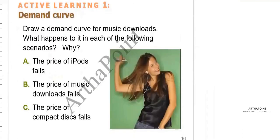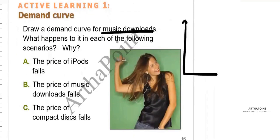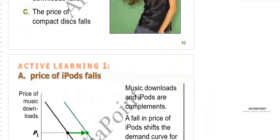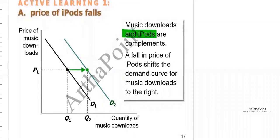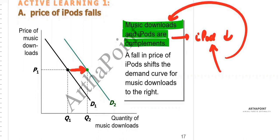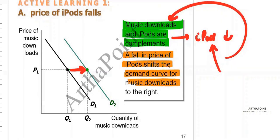Let's take an example: draw a demand curve for music downloads with price and quantity. What happens when the price of an iPod falls? iPod and music downloads are complement goods, so when the price of iPod falls, people demand more iPods and therefore do more music downloads. The demand of music downloads increases, and the demand curve of music downloads shifts to the right, even though the price and quantity of music downloads themselves haven't changed.